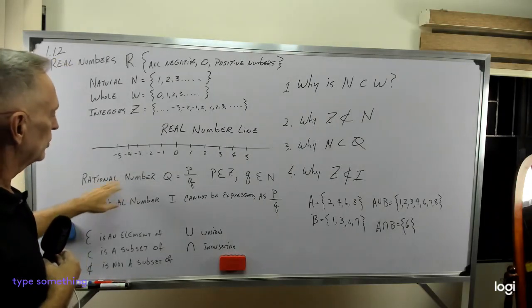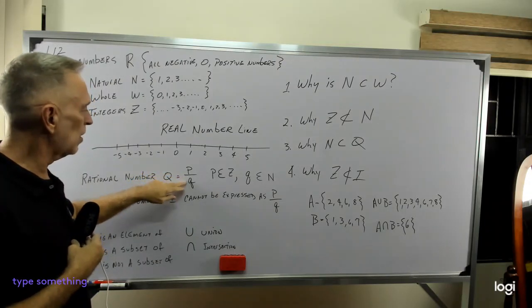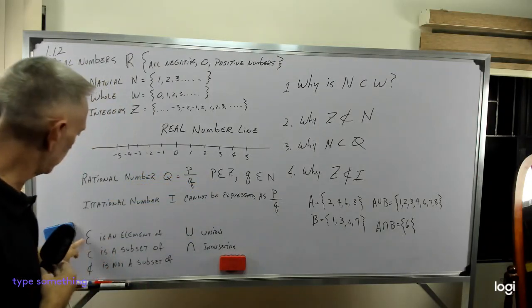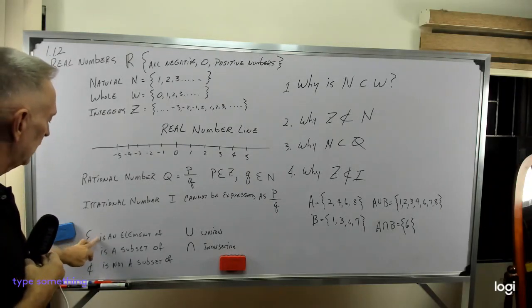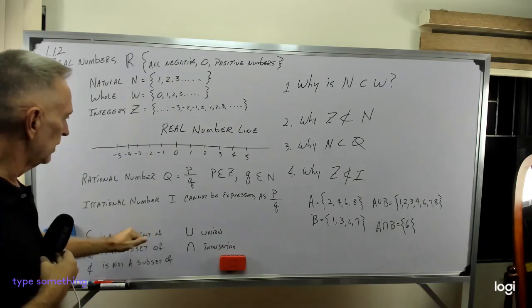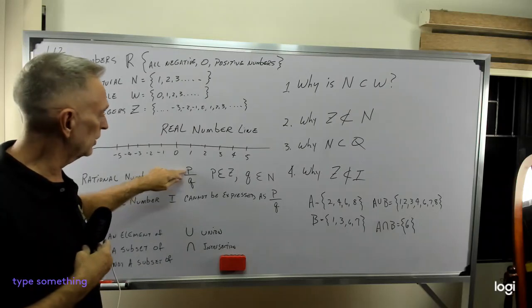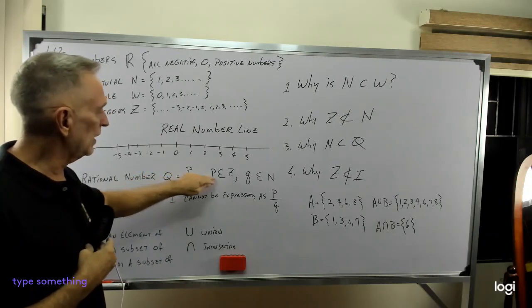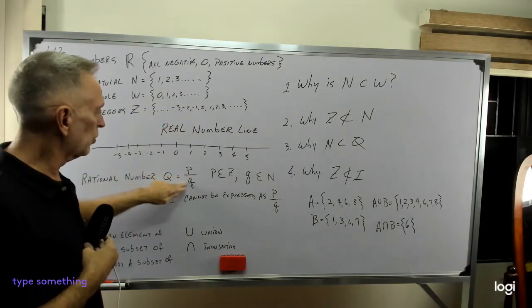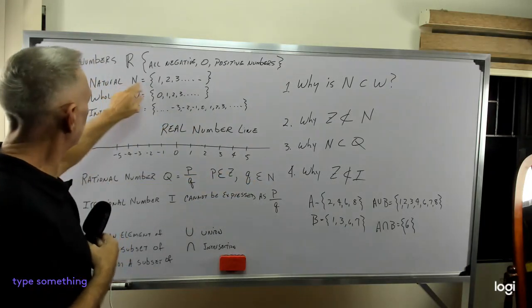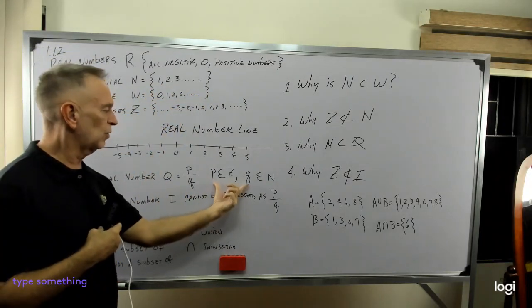So rational numbers, denoted by a large Q, are p divided by a small q. Now this little symbol, I should talk about those, this little e-looking thing, it means is an element of. So in this case, p, the numbers in the numerator of this quotient, it's on the top, p, they're an element of Z, which are my integers. q, small q, is an element of N of the natural numbers.